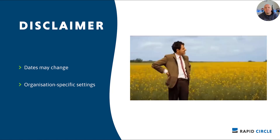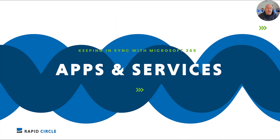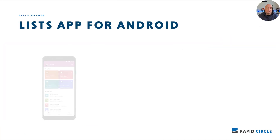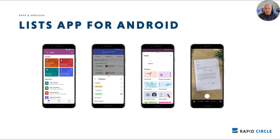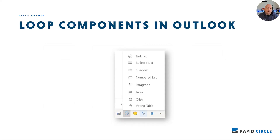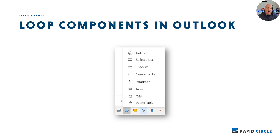Starting in apps and services: finally, many many months after the iOS app was released — in fact well over a year — the Lists app is now coming to Android. It is expected to roll out late April to early May, however the link provided currently returns an error, so hopefully in the next few days we'll see it go live. Great to see the Lists app finally coming to Android.